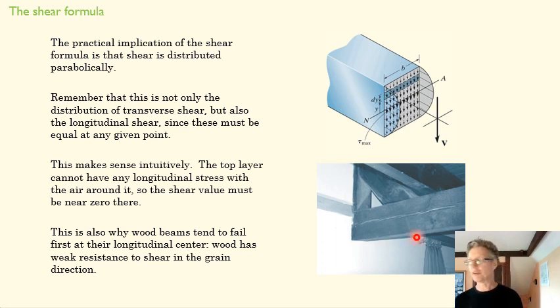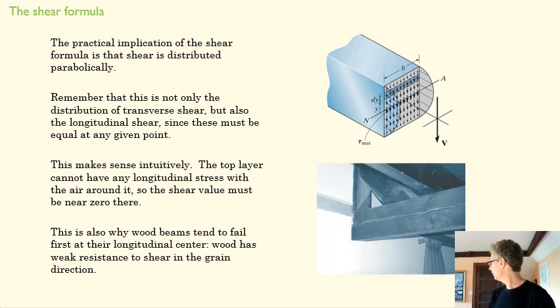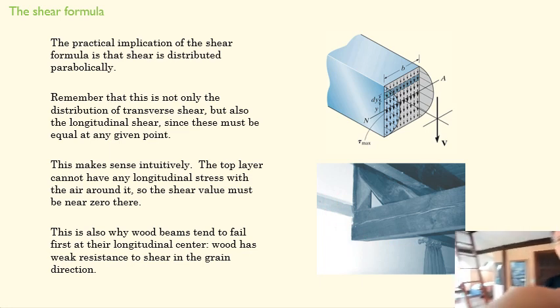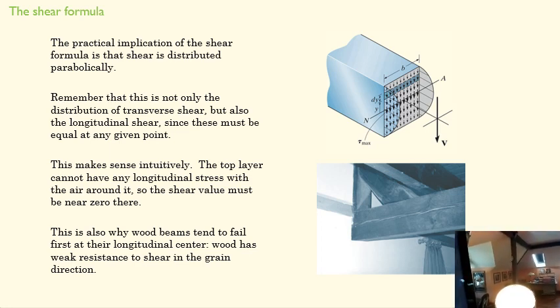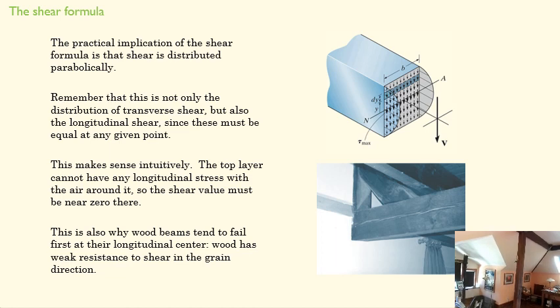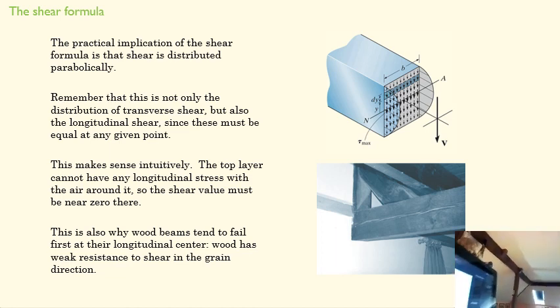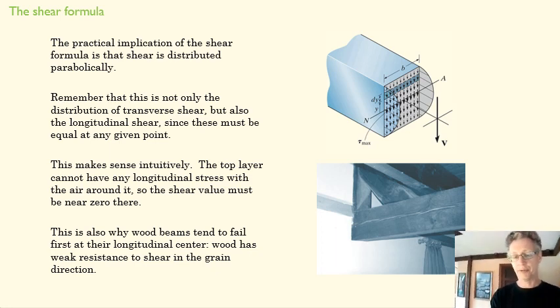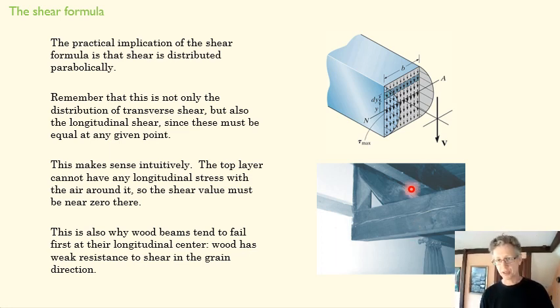And if we think about that, that makes some sense. We can't have any shear stress on the top surface with air around it, it's just going to move that air if it needed to. And so the shear value is going to be near zero at the top, and it's going to get higher and higher towards the middle. And so if you look at an old building, in fact I'm standing in my attic here, if you can see on that beam right there, notice where it's cracking. That's typical of a wood beam. We see the same thing on horizontal beams. They tend to crack in the middle there and along the grain, and so we see that same thing right here. So, key point here, conceptually, is this parabolic distribution of shear stress and the fact that it's a longitudinal shear stress as well as a transverse one.